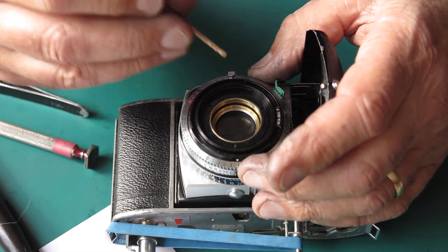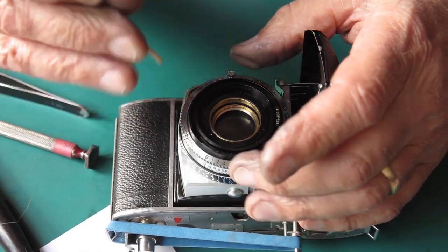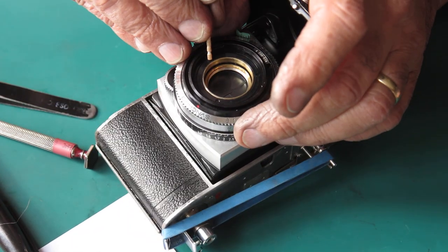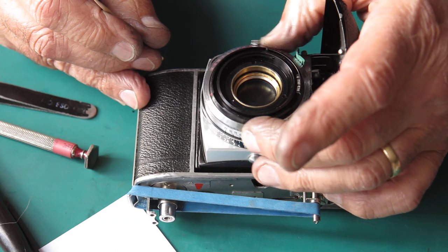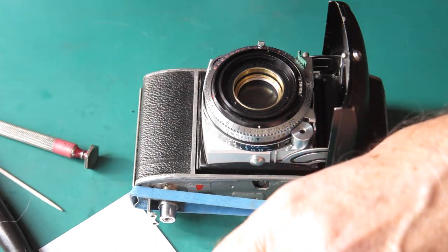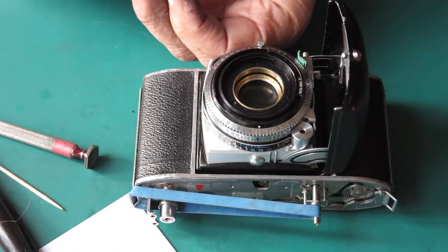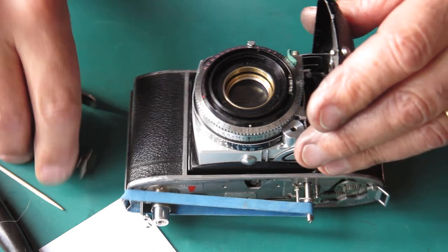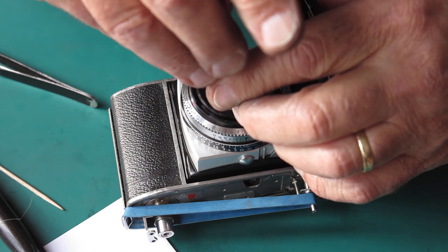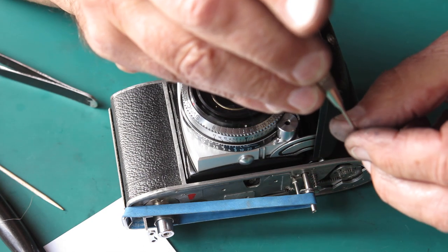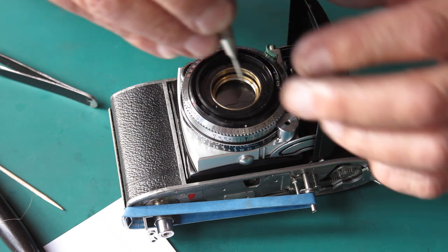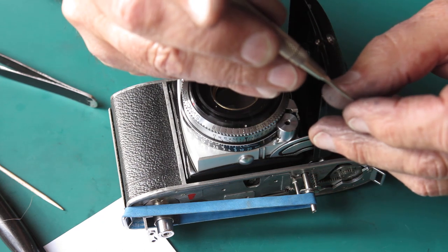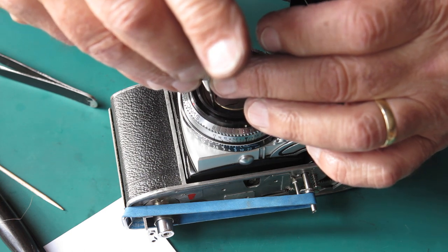I always use a wooden toothpick or a bamboo skewer or something to move this retaining ring around. If you use the tip of a screwdriver or something, you will inevitably slip off and end up scratching something and leaving ugly marks. You never want to leave ugly marks because then some rude technician will come along behind you and say, what a bloody awful job you did.